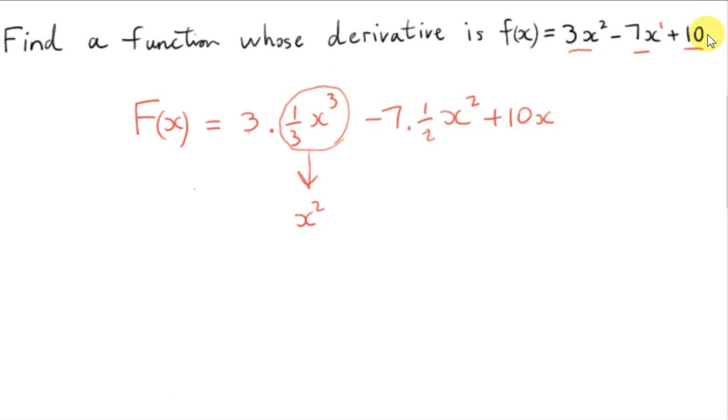More formally, we could think of 10 as 10 times x to the power of 0. So we add 1 onto 0 to get x to the power of 1, and we divide by the new power, which is 1. But in general, every time we see a constant, we just tack on the variable. So we're integrating with respect to x, so we just tack on x.